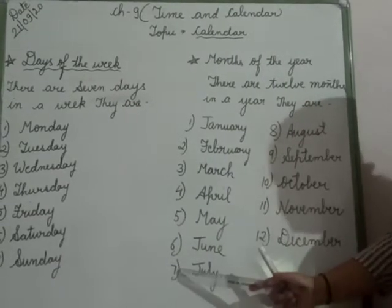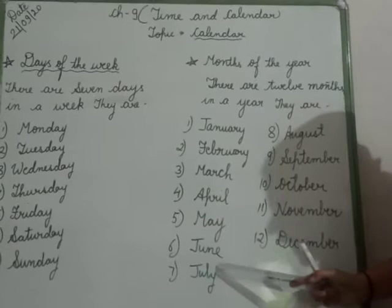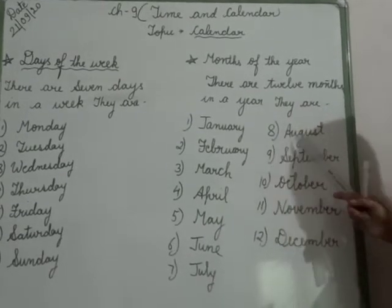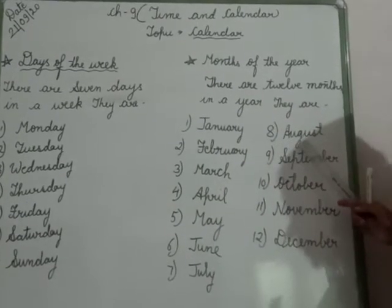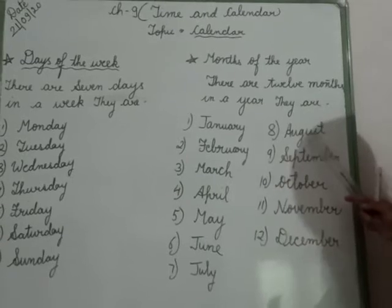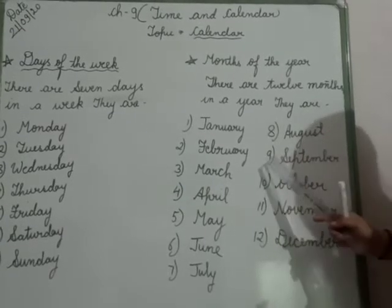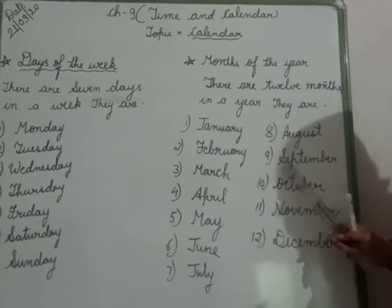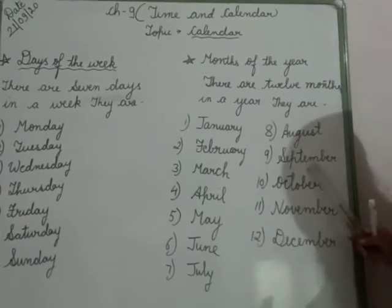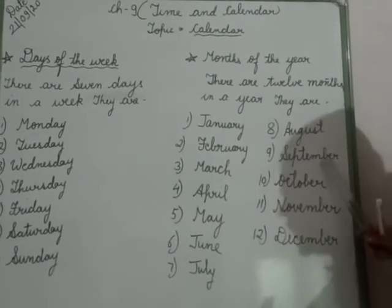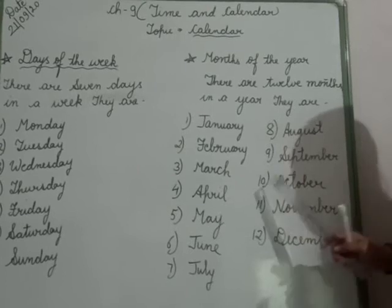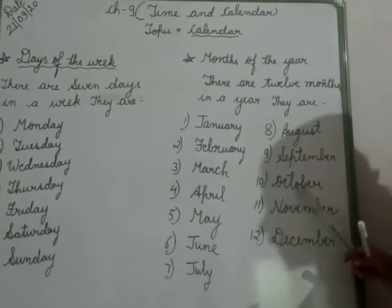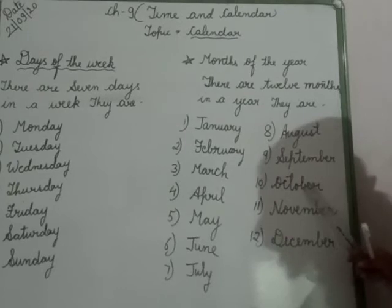Seventh month, July, J-U-L-Y. July. Eighth month, August, A-U-G-U-S-T. August. Ninth, September, S-E-P-T-E-M-B-E-R. September. Tenth month, October, O-C-T-O-B-E-R. October.